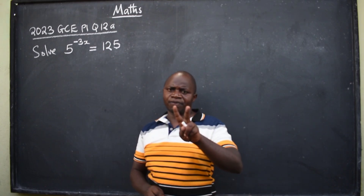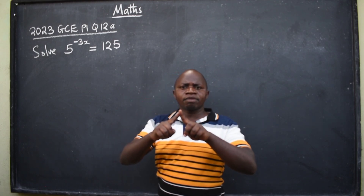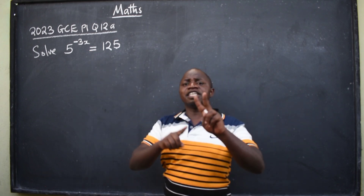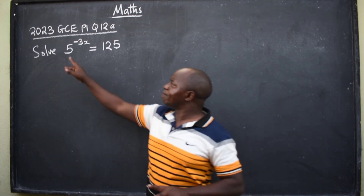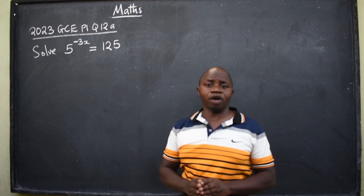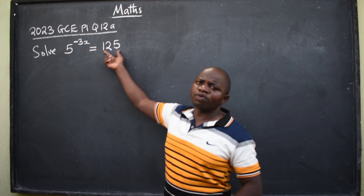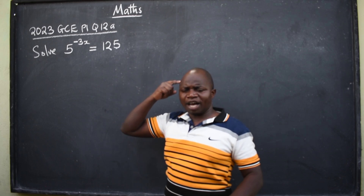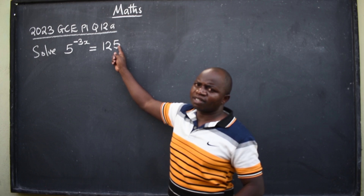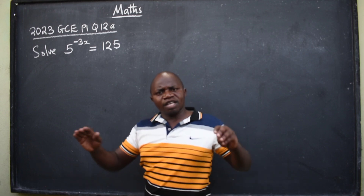There are two major ways that should come into your mind. One is by substitution. The second one is by making the bases to be the same on both sides of the equation. So here I've got 5, and here 125. I should ask myself: how can I turn this to have a base of 5 so that they are the same?